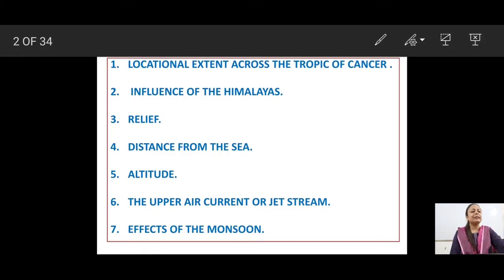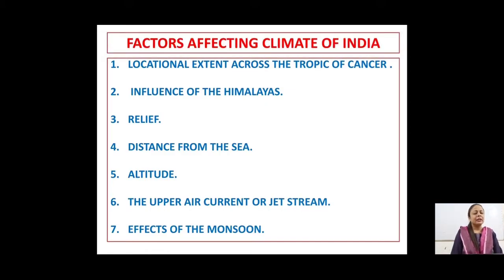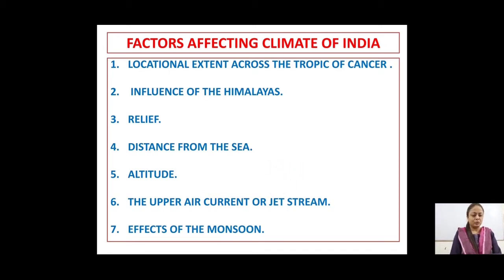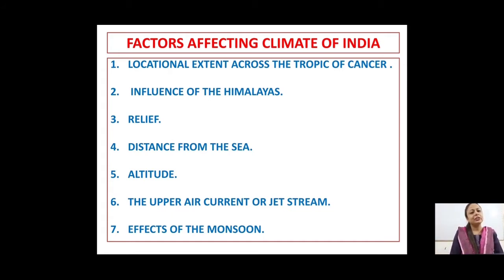These are the list of factors that affect the climate of India specifically. Let's read them: locational extent across the Tropic of Cancer, influence of Himalayas, relief, distance from sea, altitude, upper air current, jet stream, and the effect of monsoon. So students, there are 7 factors in the list and we will learn about them one by one and see how they affect the climate of the country.